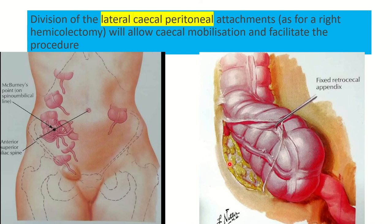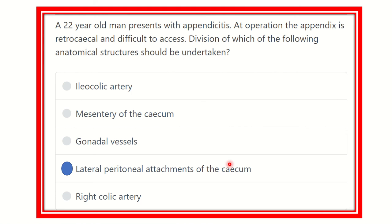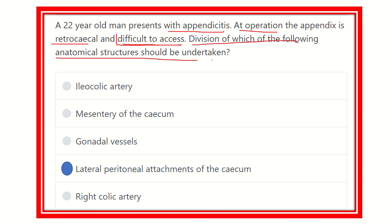Reviewing the question again: a 22-year-old man presents with appendicitis. During the appendectomy procedure the appendix is retrocecal and difficult to access — meaning it is retrocecal and also fixed. Division of which of the following anatomical structures should be undertaken?